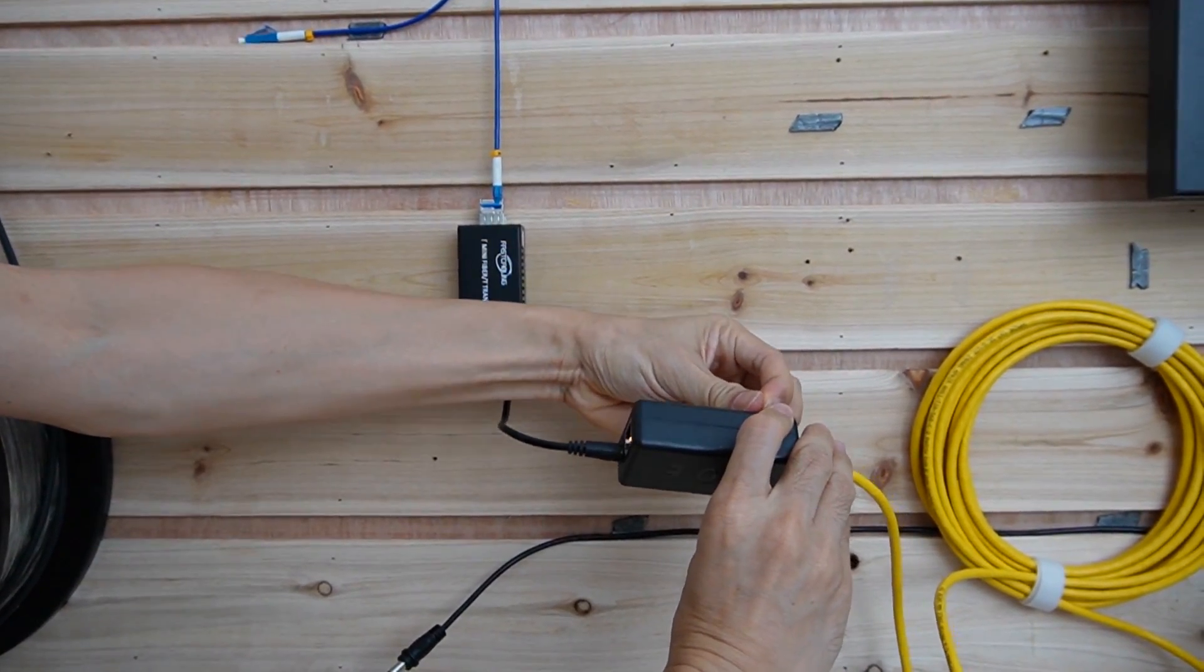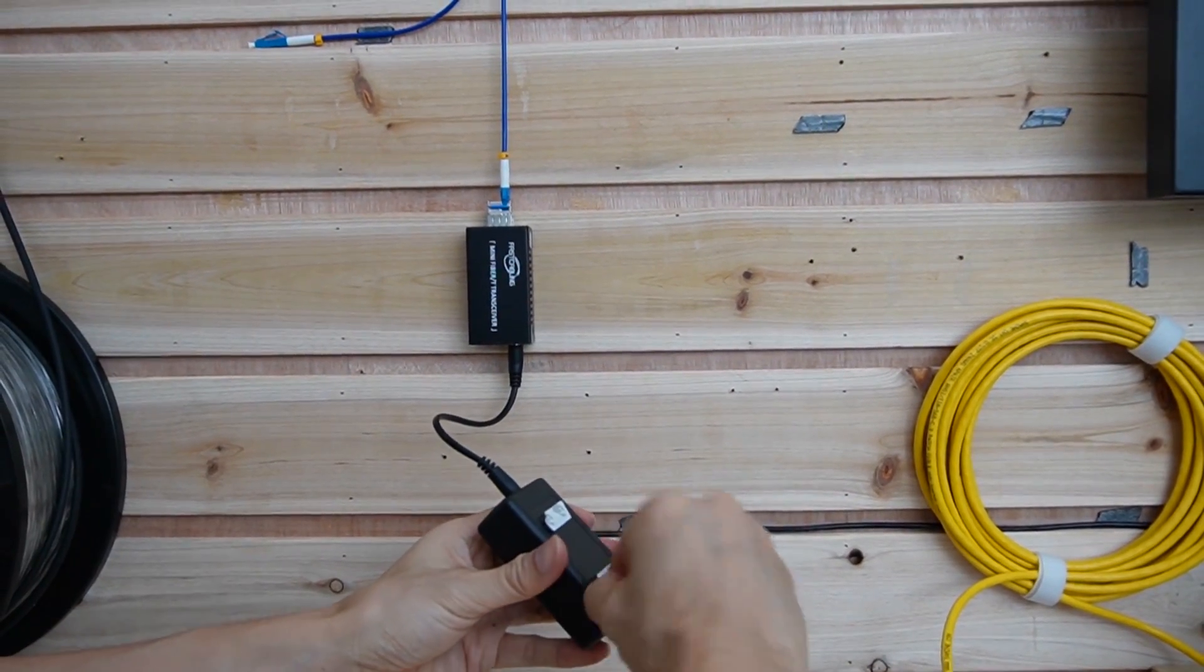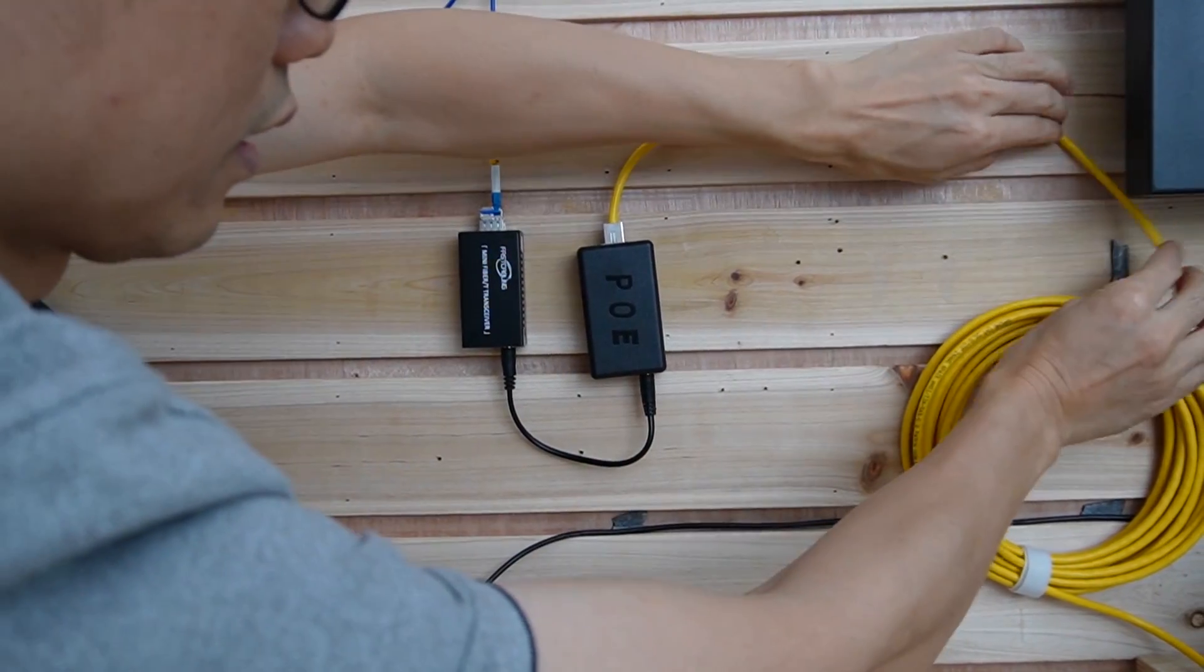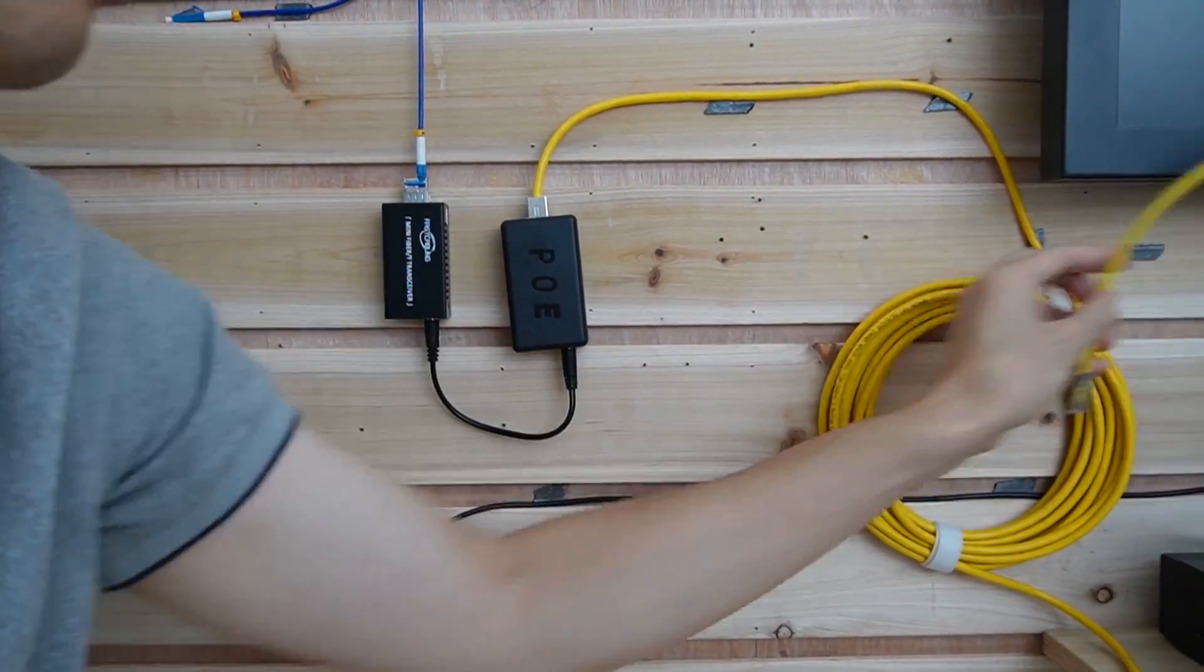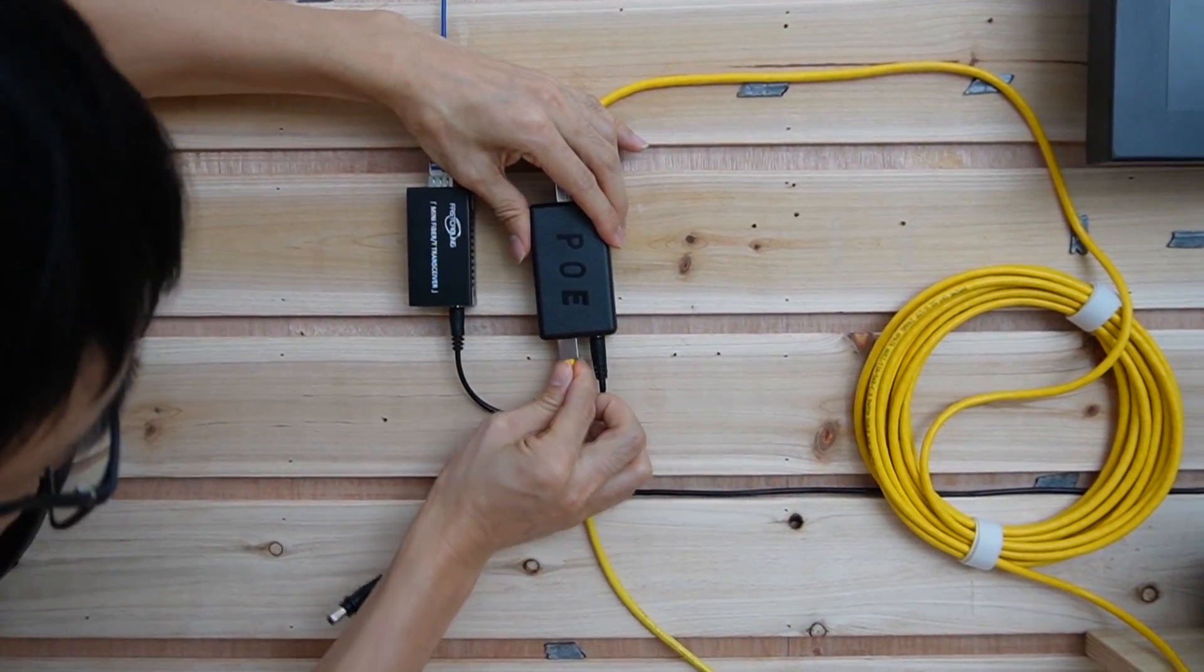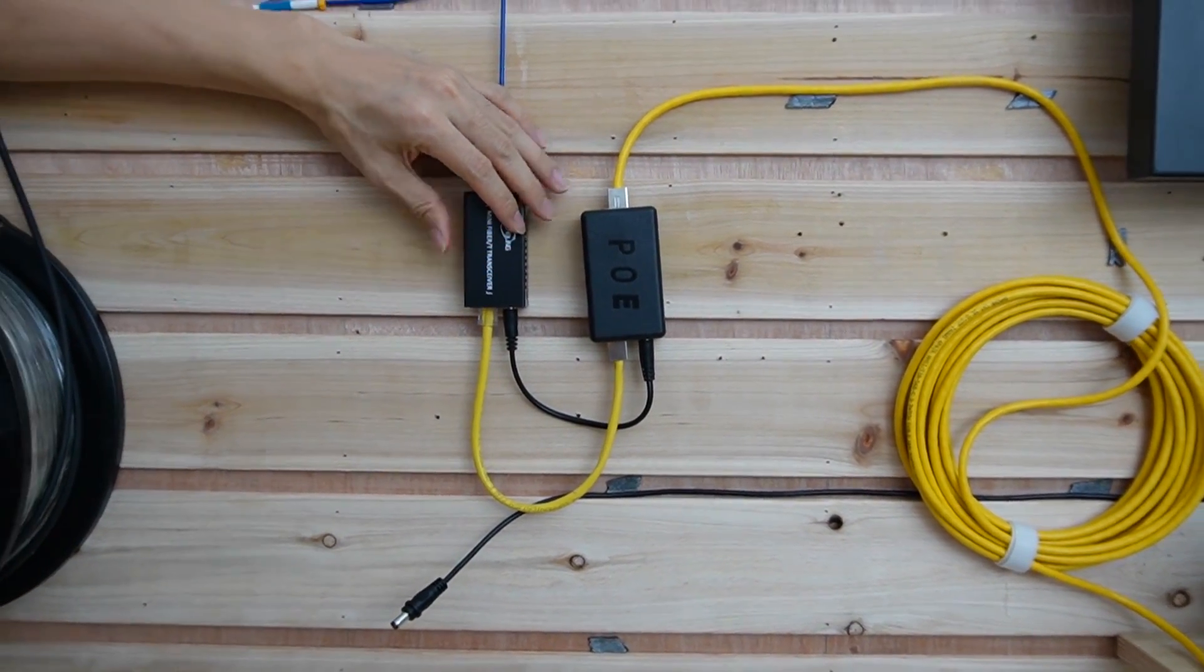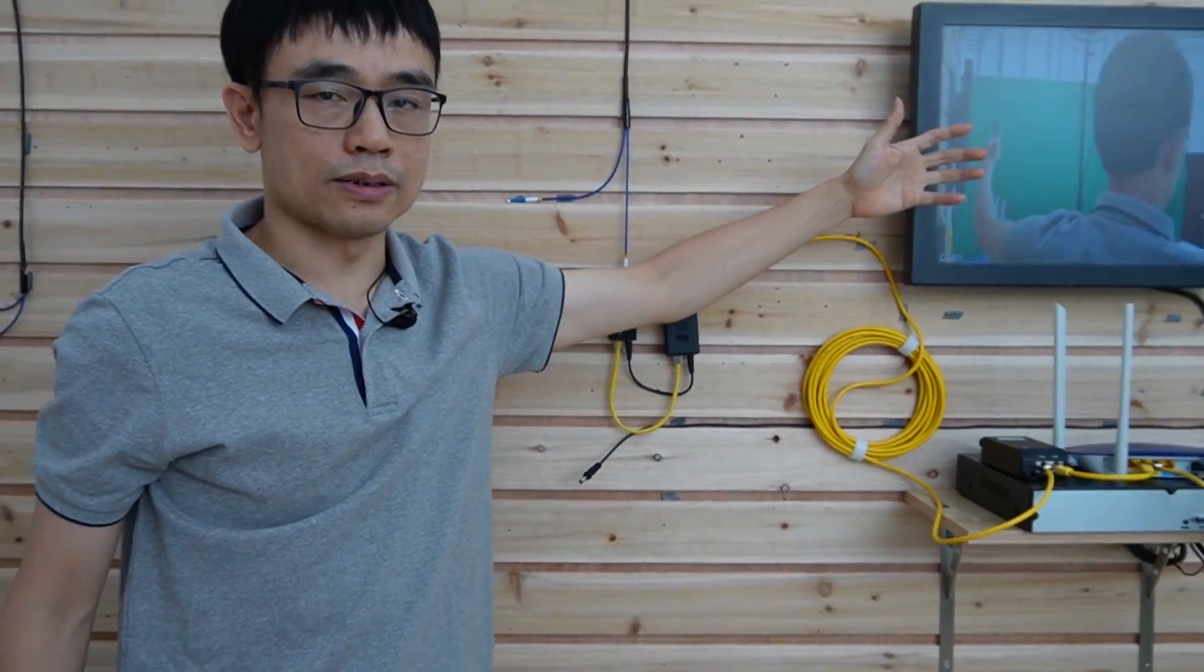Alright, let me just place the media converter on the wall. Okay, just get the cable manager. And now, we still have another short patch cord to connect this PoE splitter to the media converter. Now, let's just wait for a while. You can see the camera's back on light.